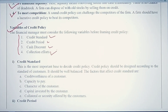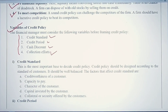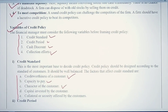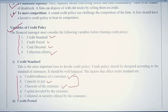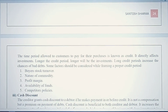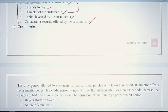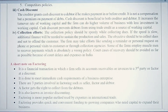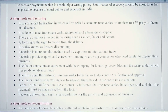Now, the variables of credit policy — the four factors that affect credit policy — are: credit standards, credit period, cash discount, and collection efforts. Under credit standards, we consider the creditworthiness of a customer, their capacity to pay on time, their character, the capital invested by the customer, and any security offered. Credit period depends on the nature of goods and services, buyer's turnover, and profit margin. The company can also offer cash discounts and put in collection efforts; a good collection department enables better credit facilities.